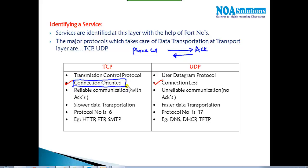When TCP sends information, it first asks for confirmation before actually starting to send. Connectionless is the opposite — just like a text message or email, you don't need to be online to receive it; it automatically arrives in your inbox. There is no acknowledgement required from the receiver before sending.